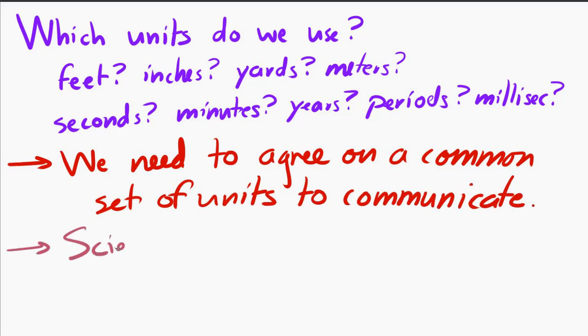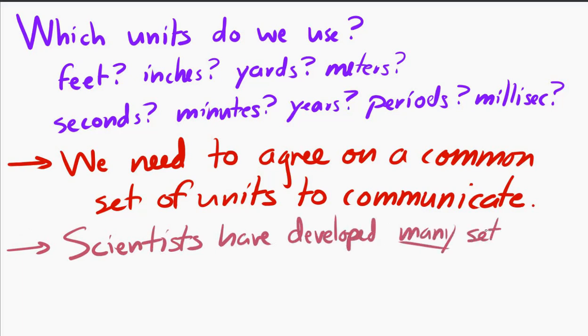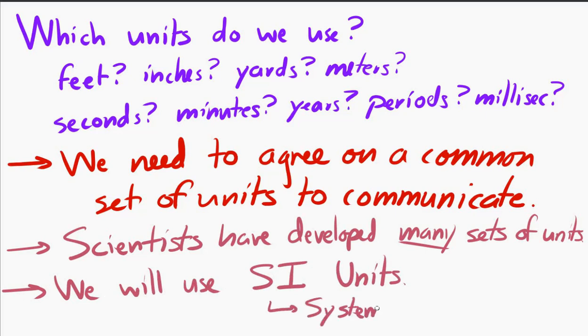So scientists have addressed this. They've developed many different types of common sets of units. The most common one these days, and the one that we're going to use in this class, is the system of SI units. SI stands for Systeme Internationale. It's French. I don't know how to pronounce it, but we're just going to call it SI units.